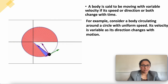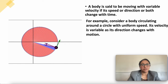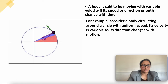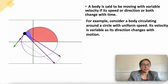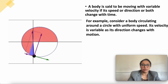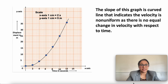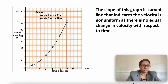A best example is a body circulating around a circle with uniform speed — here the direction keeps changing but the speed remains constant. The nature of the graph is not a straight line. The slope of this graph is a curve, which indicates that the velocity is non-uniform.